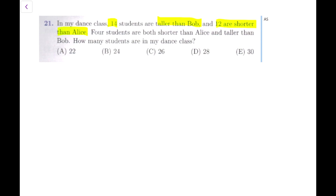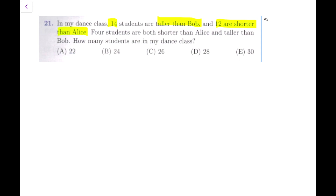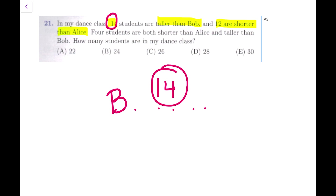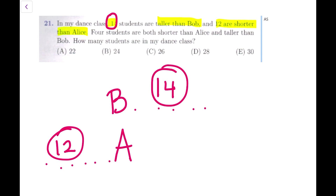So there are 2 children we know, Bob and Alice, and we don't know who is taller or shorter. But if we arrange them in ascending order of height, we are going to work out this scenario with everyone arranged in ascending order. B for Bob - we know 14 students are taller than Bob, so 14 students would be standing after Bob in the queue. And there are 12 children shorter than Alice, so 12 children are before Alice in the queue.